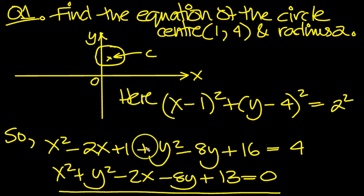Let's just double check that then. We've got x squared and y squared, minus 2x, minus 8y, that's fine. And then we've got 16 plus 1 is 17. Take away the 4 leaves 13.